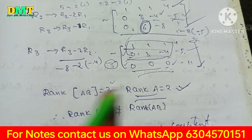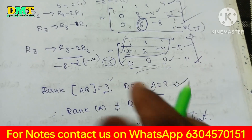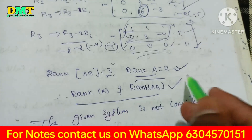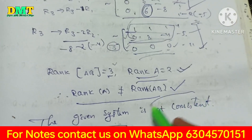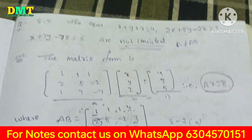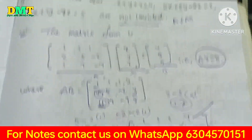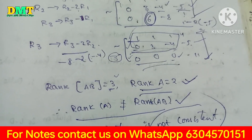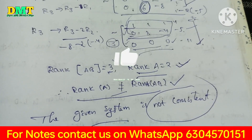Since 3 is not equal to 2, rank [A|b] is not equal to rank A. Therefore the system is inconsistent — it has no solution. If you understand the matrix form, you can find rank A and rank [A|b], and determine consistency. This is the solution.